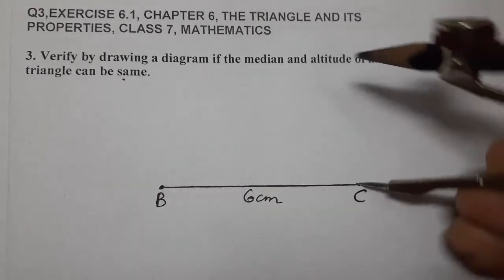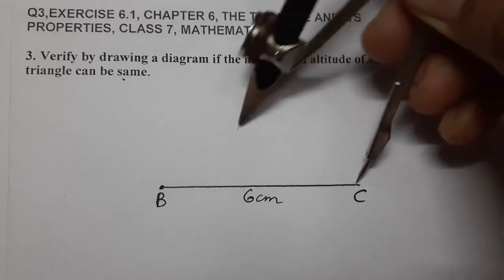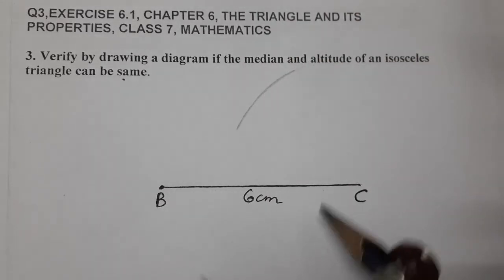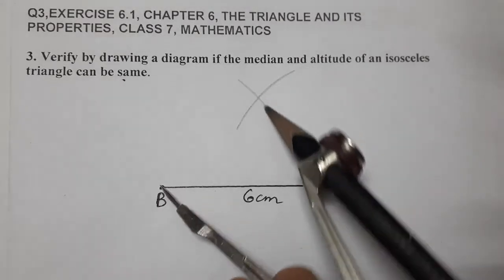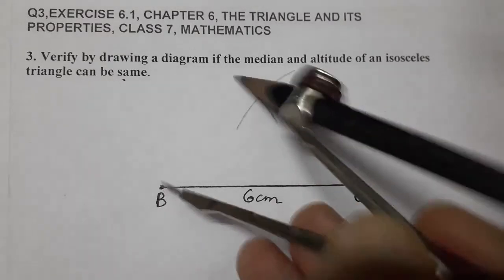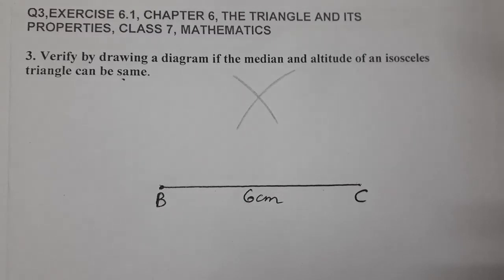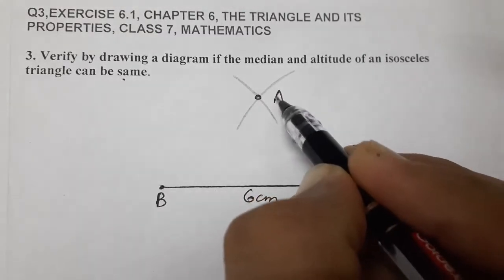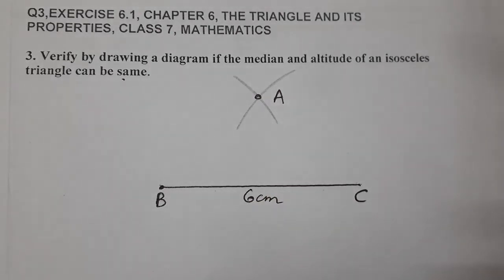Now take 4 centimeters from C and draw an arc like this, and from B also take the same arc radius. They are intersecting each other at A. So give this name point A. Now join AB and AC.